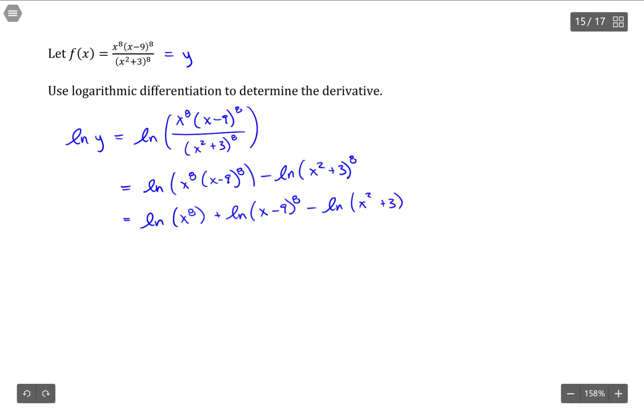Anytime we have logarithms of two items multiplied, we can decompose that into two logarithms that are added. And finally, another important property of logarithms is anytime we have an exponent on the argument of our logarithm, we can pull that out as a constant multiplier. So, this happens to all be eights, but that's okay. There we have it.